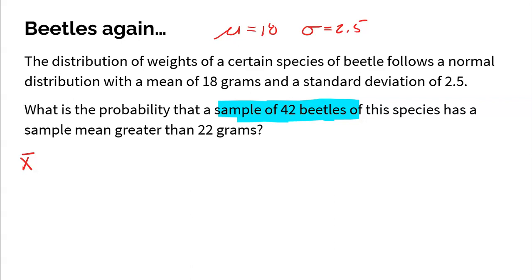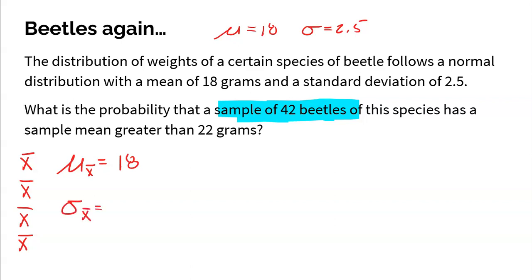My sample could differ from another sample — that's the idea of a sampling distribution, many possible samples exist. The mean of all those possible sample means should be 18. Some samples could come back more, and some less, but the mean should be the true value of 18. The standard deviation of the sampling distribution is the population standard deviation divided by the square root of the sample size.